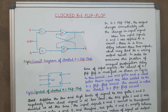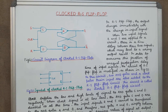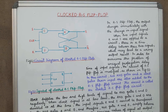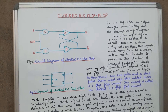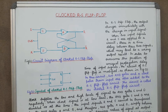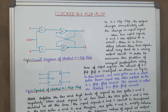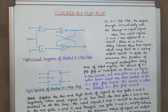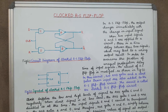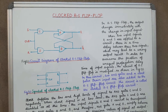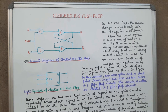In order to overcome this problem of unequal propagation delay time of input signals, the circuit of the RS flip-flop is modified as shown in figure 1. In this circuit, two AND gates and a clock pulse train input are also added to the RS flip-flop circuit. So this circuit is also called the clocked RS flip-flop circuit.